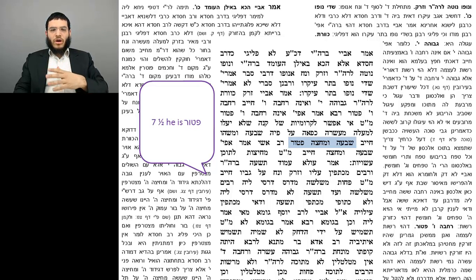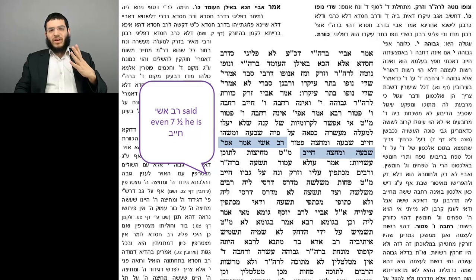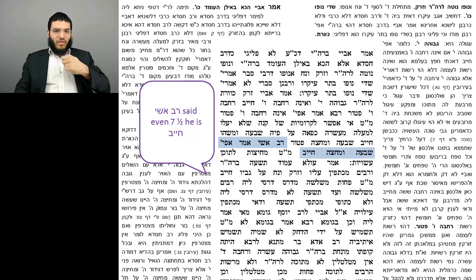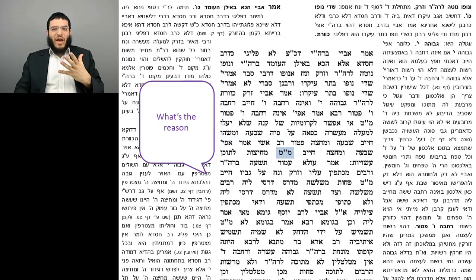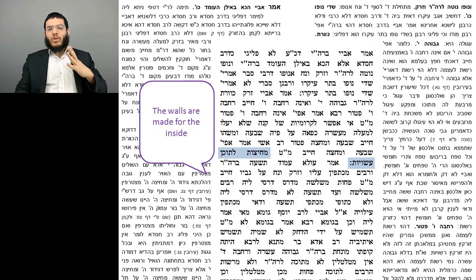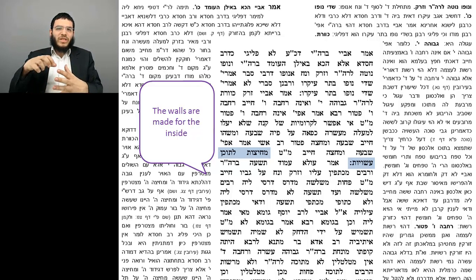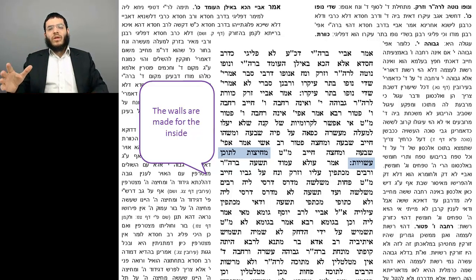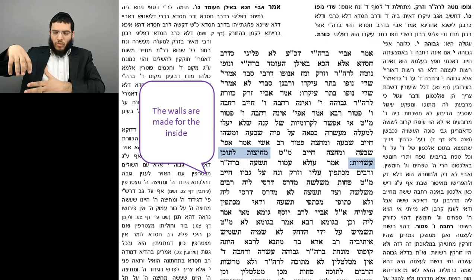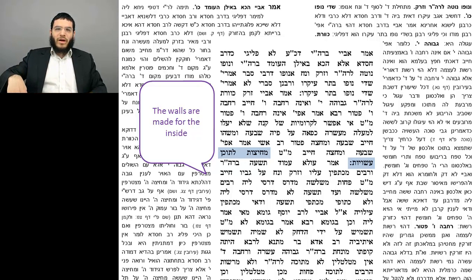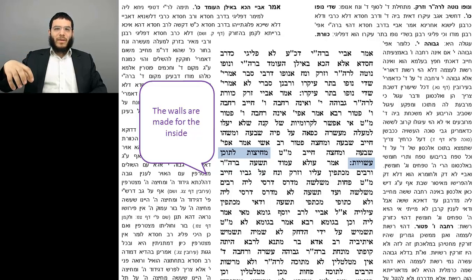Rav Ashi said: afilu shiva umechitza chayev — even 7.2 tefachim, the person will be chayev. What's the reason? Because if we apply lavud, part of it comes out to be at rest above ten tefachim. But mechitzos l'saychan asuyos — the walls are made for the inside. Since the walls of the basket are made to contain what's inside the basket, by such walls we do not say lavud. Therefore when it's 2.9 tefachim from the ground, we don't consider the walls as extending downwards. Rather, only when it actually rests on the ground is it considered at rest. At that point it's only 7.2 tefachim high — an object fully at rest in the reshus harabim — and therefore the person is chayev.